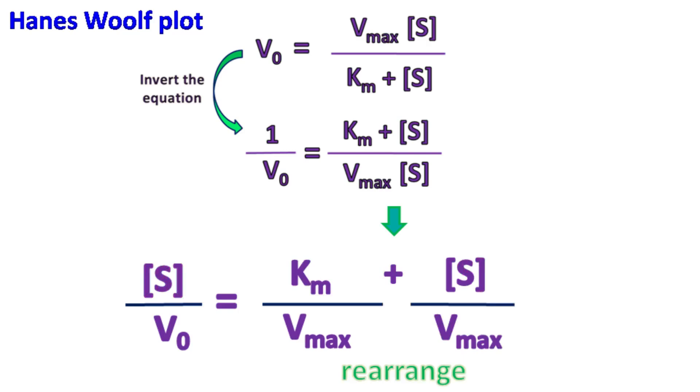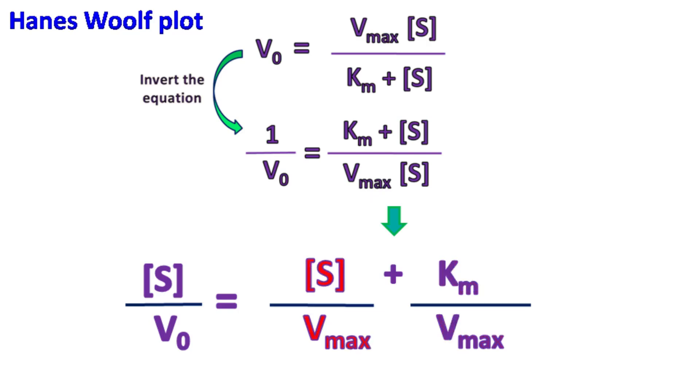Now let's rearrange Km by Vmax and S by Vmax. This gives S by V0 is equal to S by Vmax plus Km by Vmax.